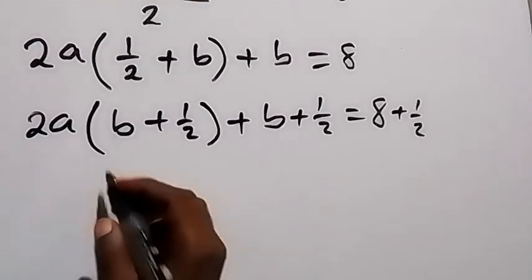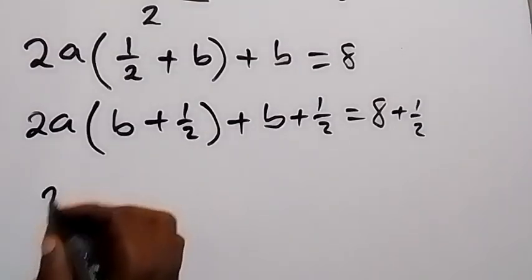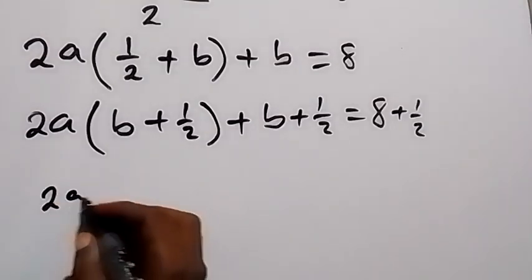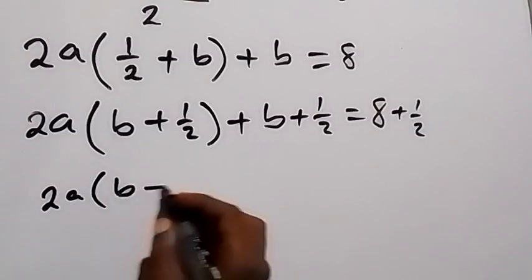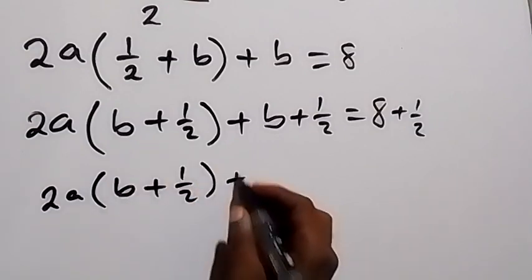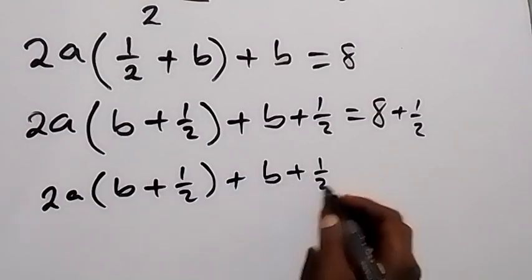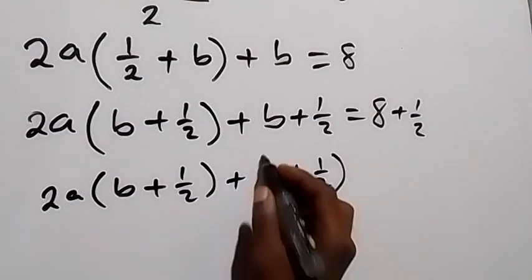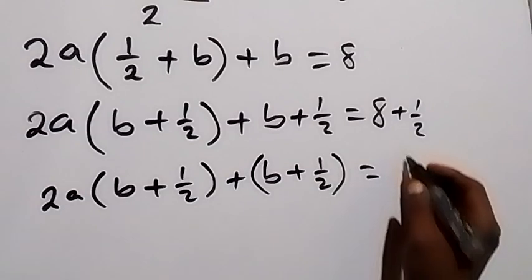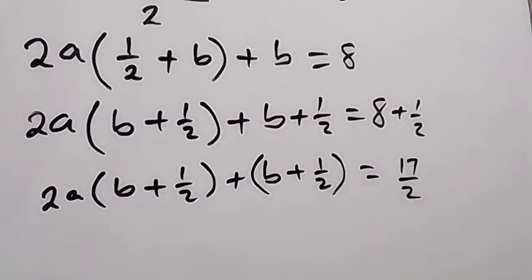So we have 2a into bracket (b plus half), then plus (b plus half), equals 8 plus half, adding half to both sides. From here we can write the right side as 17 over 2.